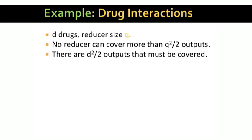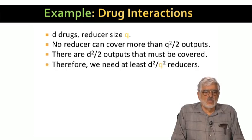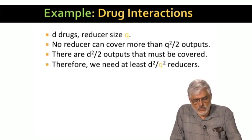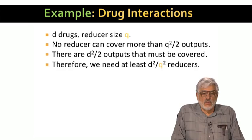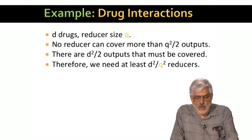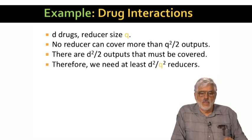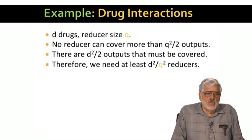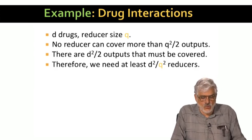But among all the reducers, there are D choose 2 outputs that must be covered. Again, I'll approximate the choose 2 by squaring and dividing by 2. So there are approximately D squared over 2 outputs to cover somewhere. So, if we divide the number of outputs by the number of outputs one reducer can cover, we get the minimum number of reducers that must exist. In this case, the number is D squared over Q squared.